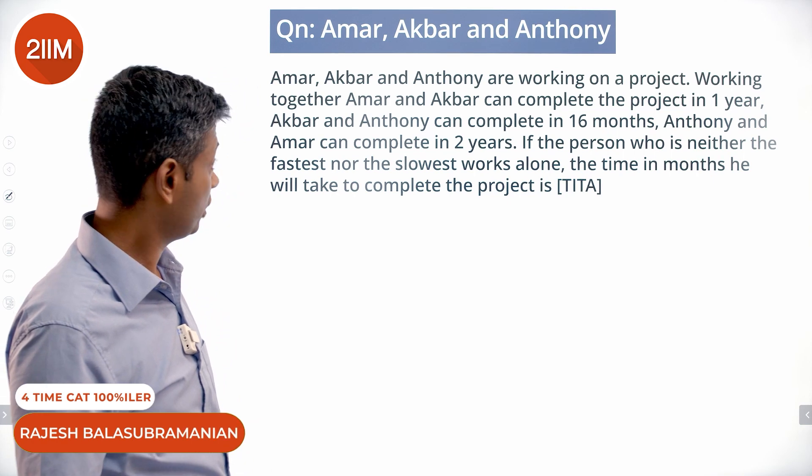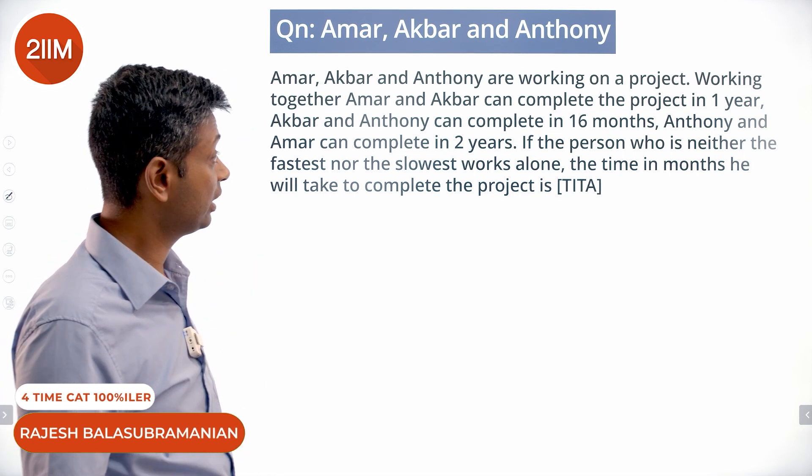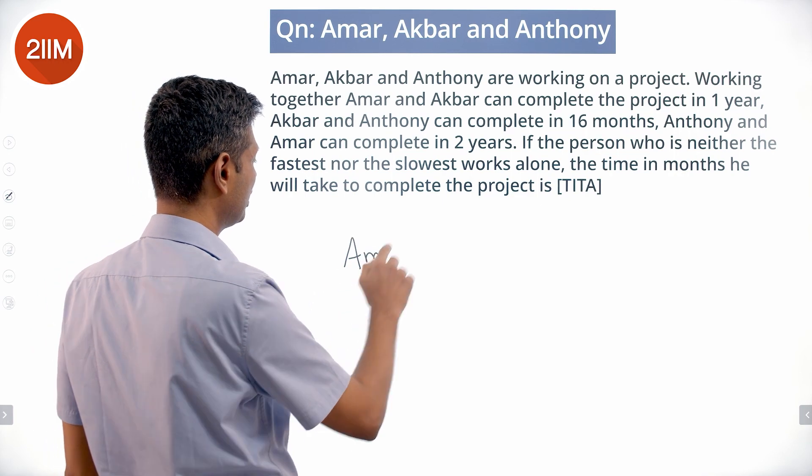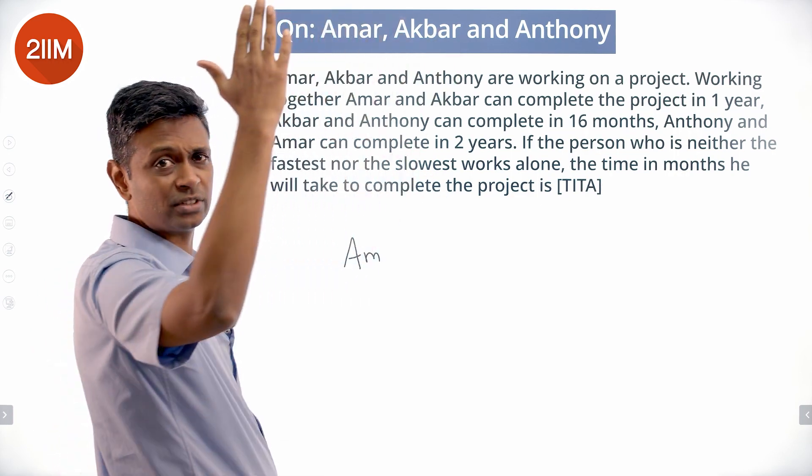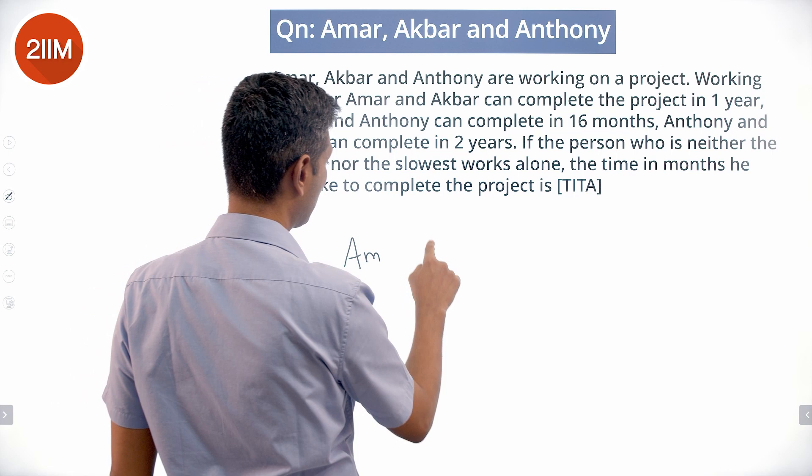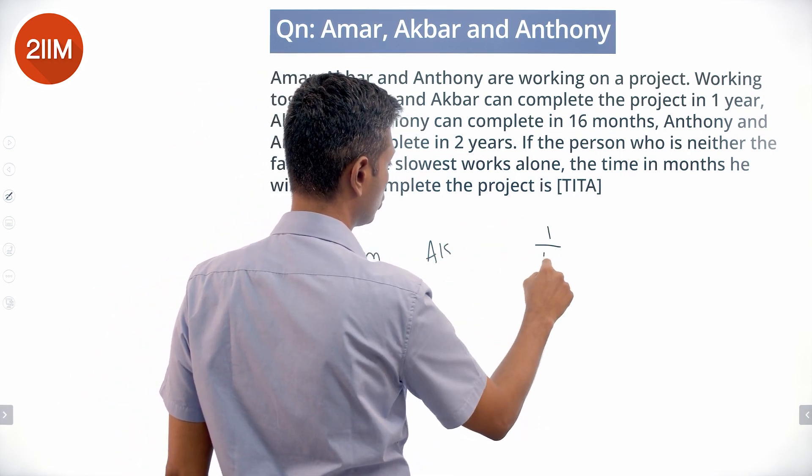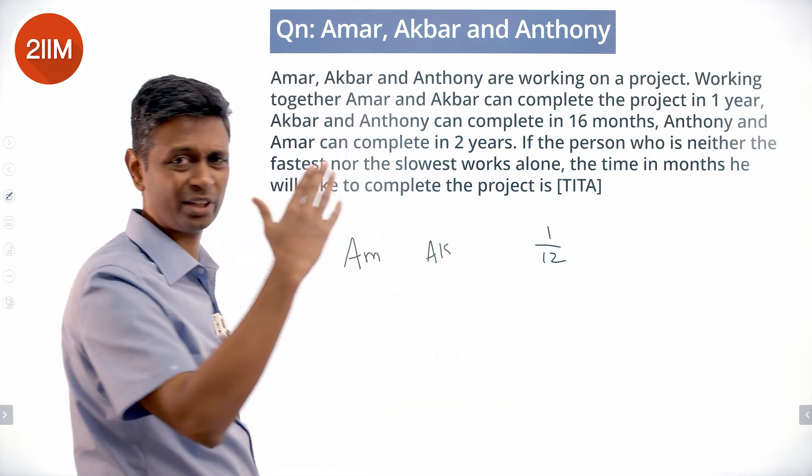Amar, Akbar, and Anthony are working on a project. Working together, Amar and Akbar can complete the project in one year. So Amar and Akbar can finish it in one year, or they can do 1/12 per month since there are 12 months in a year.